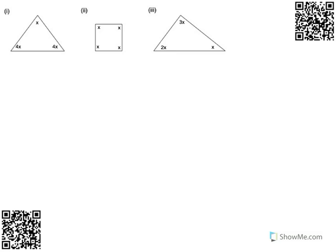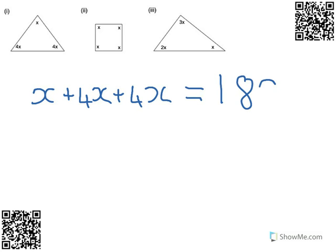For the first question, we've got a triangle with x in one corner, 4x in one of the bottom corners, and another 4x in the other corner. Now, as it's a triangle, we know that if we add these three angles together, they must be 180 degrees. We've now formed an equation.